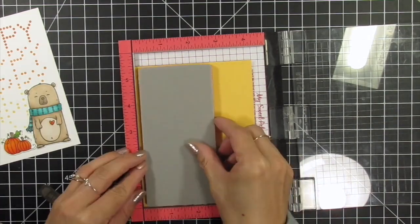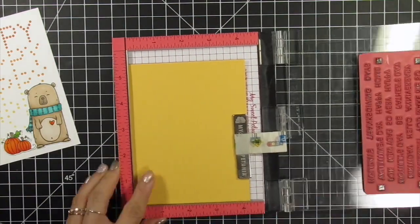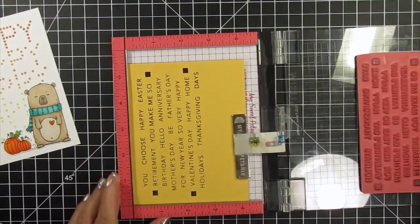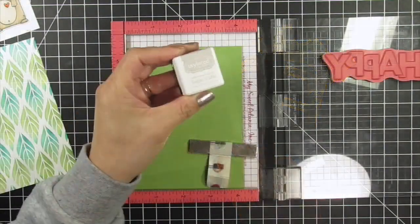I stamped the Building Blocks Happy Additions on Pineapple cardstock and die cut them using the coordinating die. Then I place the Thanksgiving strip on the card so the sentiment ties into the stencil and reads Happy Happy Happy Thanksgiving.